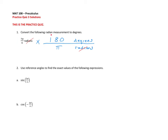I'll now multiply these two fractions together: that's 7π over 6, multiplied by 180 over π. We already canceled the units — degrees is what is left over. Ignoring the unit and focusing on just the numbers, I can cancel the π's, with 1 left over.